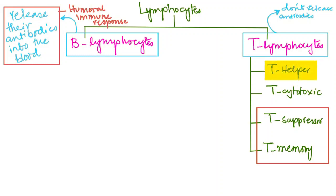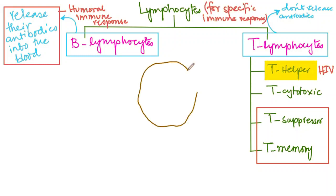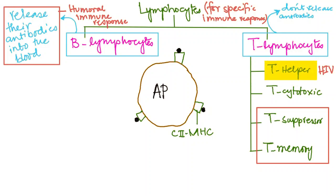The T helper cells are notably the cells attacked and destroyed by HIV — the human immunodeficiency virus, which causes a deficiency of immunity by destroying the T helper cells and the third line of defense, also called the specific immune response. T helper cells can stick to the antigen found next to class 2 MHC on an antigen presenting cell. The T helper cell attaches to the antigen on the class 2 MHC using its antibody, also called an immunoglobulin.